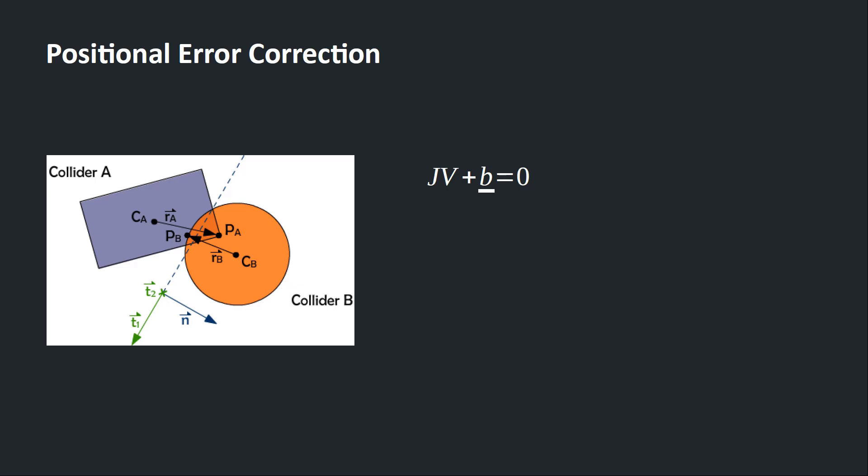Simply resolving the velocity constraint is not enough to fix all the positional error. We need a bias term to do that. From previous presentation, we use a technique called Baumgart stabilization, which basically says we use the position constraint value, which already is equal to the positional error. We plug it in and multiply it with a correctional term, beta over h. h is our delta time.